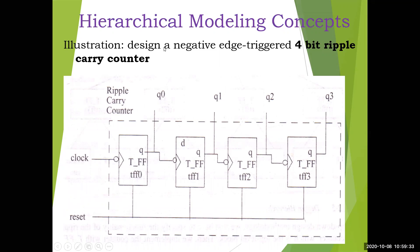The top-level block here is the 4-bit ripple carry counter. Since it is 4-bit, we have four flip-flops. The first flip-flop receives the clock signal, and each subsequent flip-flop takes its input from the output of the previous one, creating the rippling effect. The counter counts from 0000 to 1111. The two inputs are reset and clock, and the outputs are Q0, Q1, Q2, and Q3.